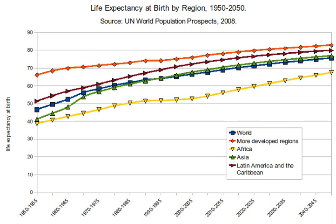In actuarial notation, the probability of surviving from age x to age x plus n is denoted ₙpₓ, and the probability of dying during age x, between ages x and x plus 1, is denoted qₓ. For example, if 10% of a group of people alive at their 90th birthday die before their 91st birthday, the age-specific death probability at 90 would be 10%. That is a probability, not a mortality rate.